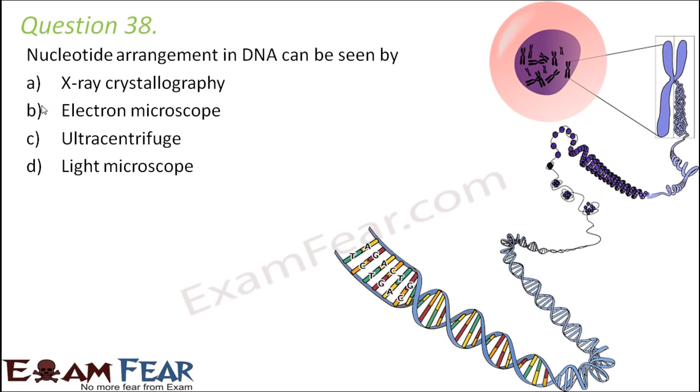Question number 38: Nucleotide arrangement in DNA can be seen by X-ray crystallography, electron microscope, ultracentrifuge, or light microscope. When you talk about the DNA molecule, DNA is one of the large macromolecules. However, the diameter of DNA is in nanometers, like 2 nanometers or 20 angstrom. The length of the DNA is in few millimeters.